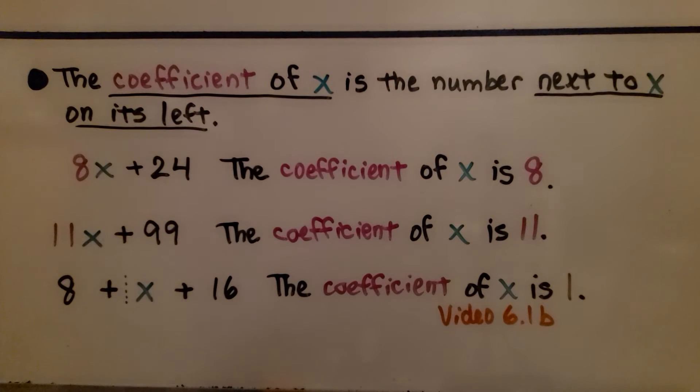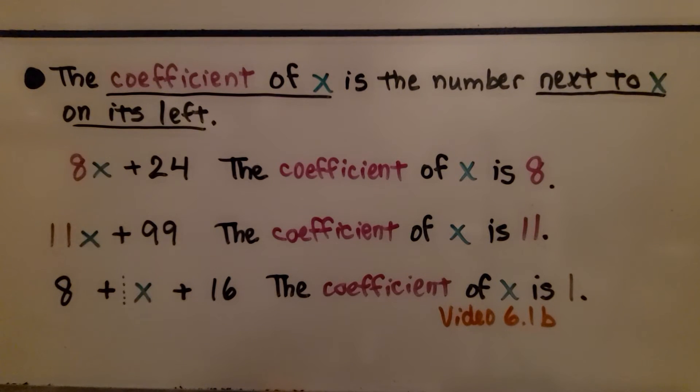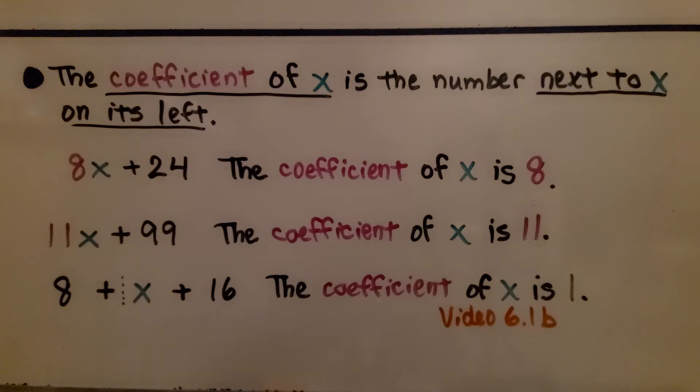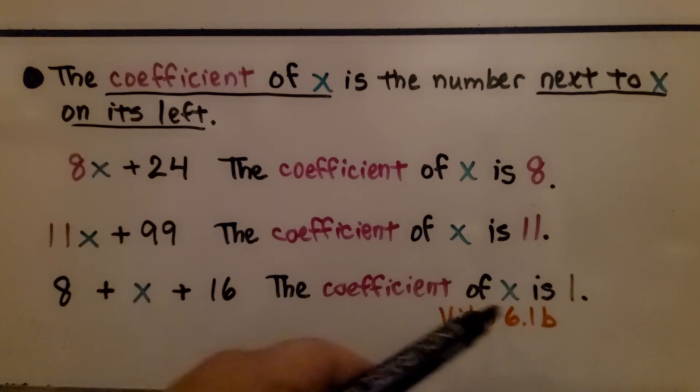We've talked about coefficients before. The coefficient of x is the number next to x on its left side. So the coefficient of x in 8x is 8. The coefficient of x in 11x is 11. But the coefficient of x here is 1. Remember, when you see a lone variable, we can imagine there's a 1 there. We don't need to write the 1—we can see there's only one x.